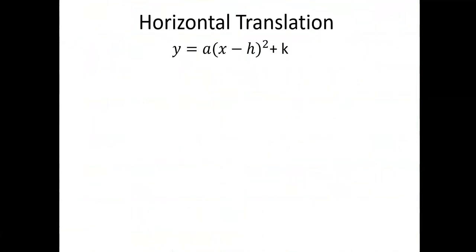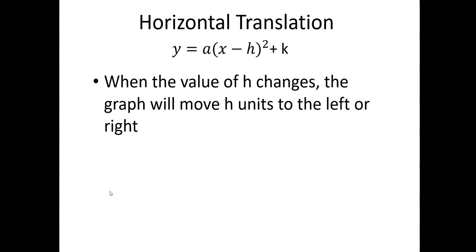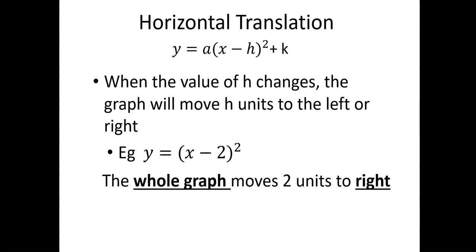Now let's look at translations, and first of all, a horizontal translation. You can see the general rule there. When the value of h changes, the graph will move h units to the left or the right. For example, y is equal to x minus 2 in a bracket squared — this whole graph will move 2 units to the right. It actually moves in the direction opposite to what you would instinctively think. Minus 2 may make you think it's going to move to the left, but it moves in the opposite direction — it moves to the right.